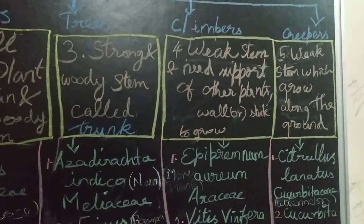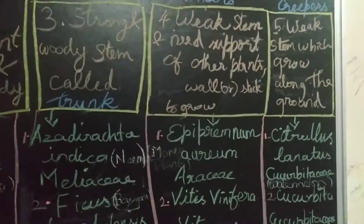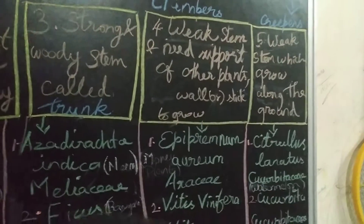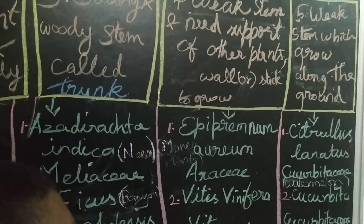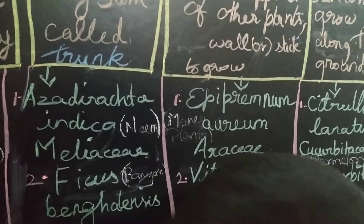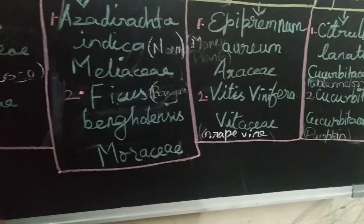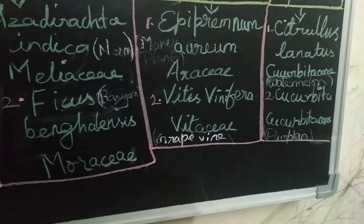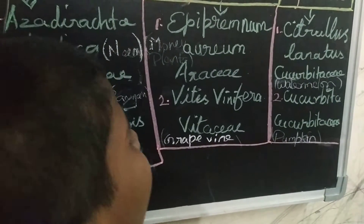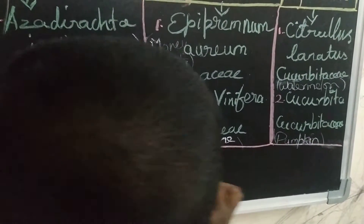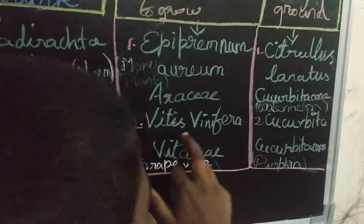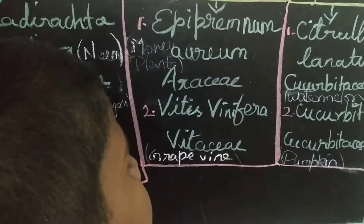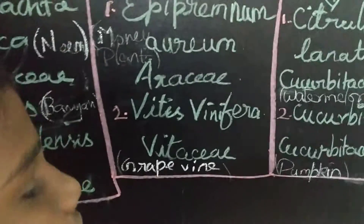The Climbers: the definition is big stem and needs support of other plants, poles, or sticks to grow. The Money plant binomial name is Epipremnum aureum and the family is Araceae. The Grapevine binomial name is Vitis vinifera and the family is Vitaceae.